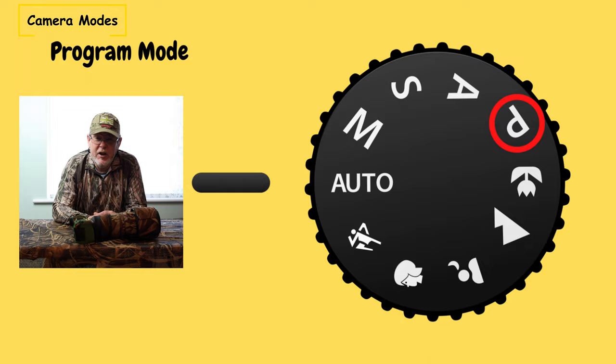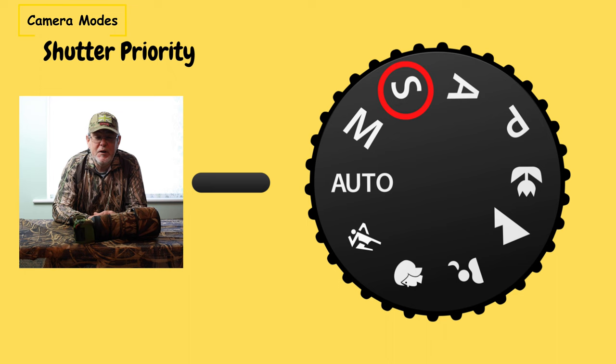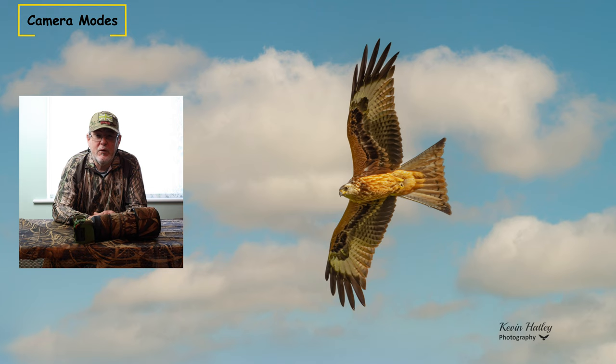Then we have shutter priority. In shutter priority, you the photographer set the shutter speed and the camera decides on the aperture. In wildlife photography, depth of field is so important — we need to be able to have complete control of our aperture to control that depth of field. It's not a recommendation to use shutter priority for wildlife or bird photography because you need to control that depth of field.